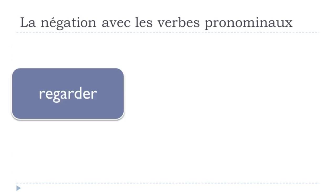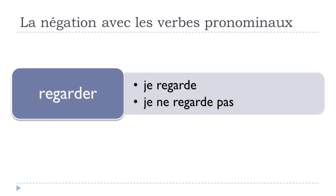At the present form, REGARDER conjugates as JE REGARDE. If you put it in the negative form, it's quite simple: JE NE — the first part goes before the verb — then PAS after it. So you get JE NE REGARDE PAS.